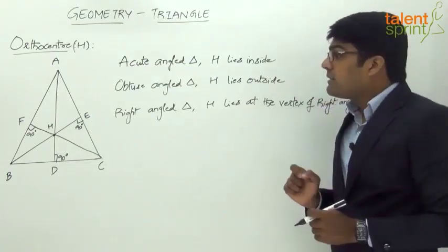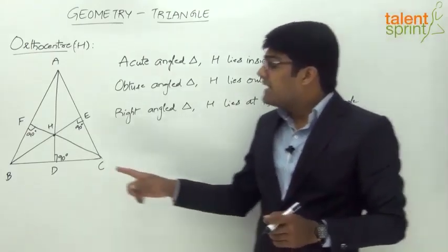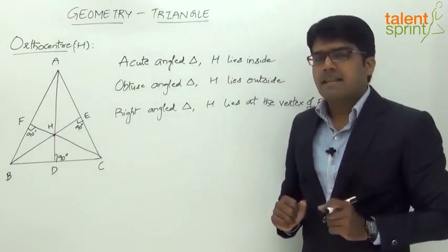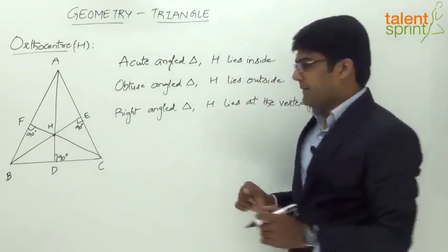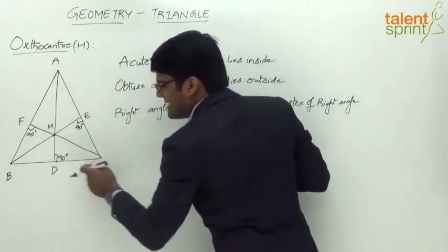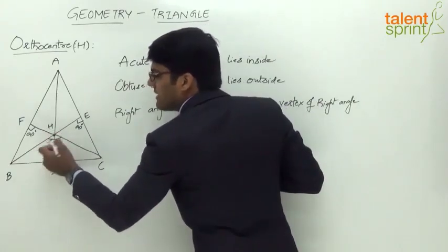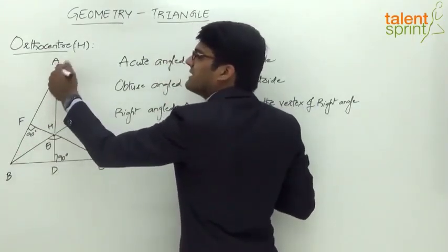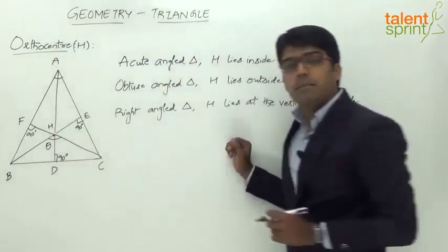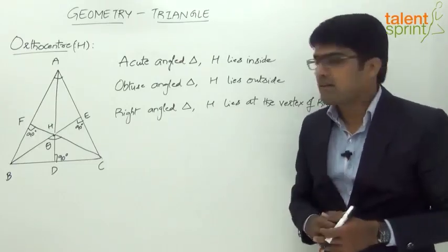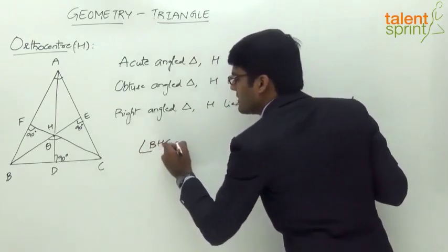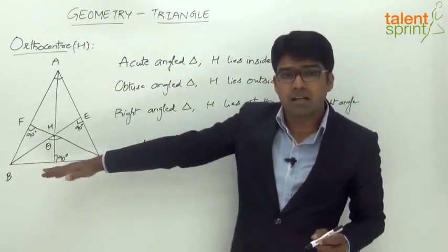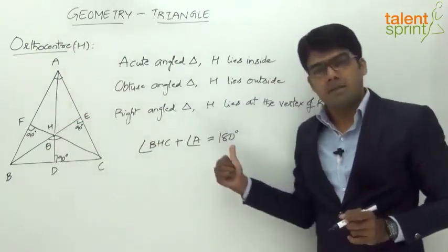An important conclusion about the orthocenter is that the angle made by any side with the orthocenter and the opposite angle are always supplementary. For example, the angle BHC — the angle made by side BC with the orthocenter H — and the opposite angle A are supplementary. This means angle BHC plus angle A equals 180 degrees. Similarly, angle AHC plus angle B equals 180 degrees.